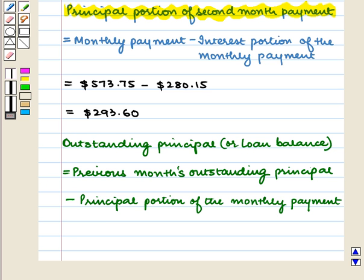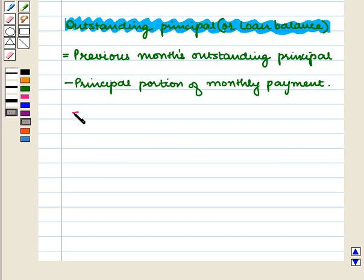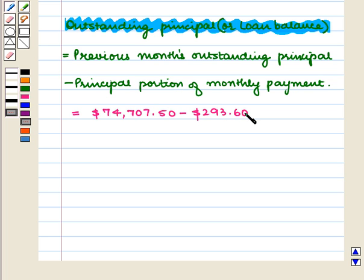The outstanding principal or the loan balance is equal to the previous month's outstanding principal minus the principal portion of the monthly payment, which is equal to $74,707.50 minus $293.60, which is equal to $74,413.90.